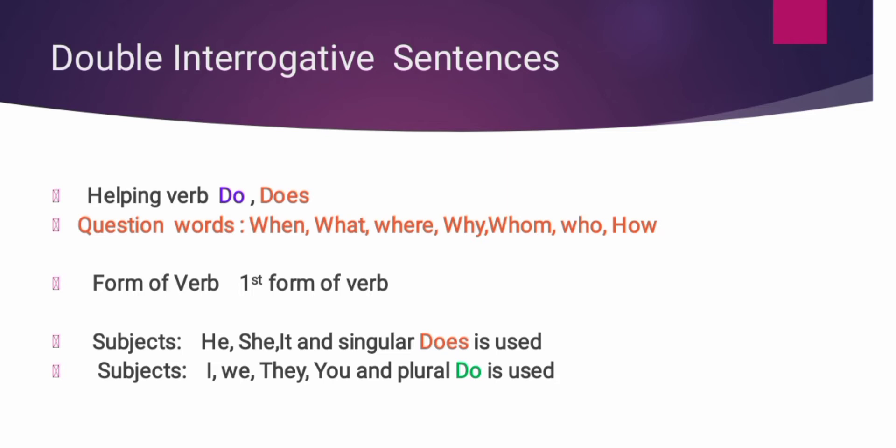अब हम देखते हैं कि कौन से subjects हैं जिसके साथ does यूज करना है और कौन से subjects हैं जिसके साथ do इस्तमाल करना है? Subjects जैसे he, she, it और singular के साथ does इस्तमाल होता है. Next हमारे पास subjects हैं I, we, they, you और plural — इनके साथ do इस्तमाल करते हैं.